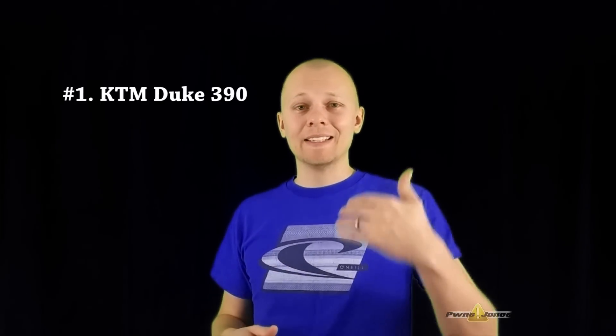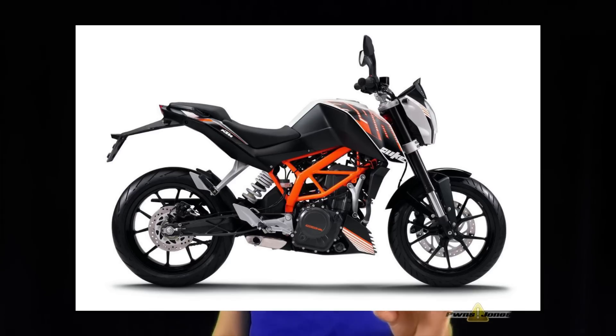Number one on the list, a bike I wish I had ridden, is the KTM Duke 390. This thing has 373 cc's. It is a good-looking bike, very unique, nothing out there like it right now. Bomb around on this puppy for around $5,000.